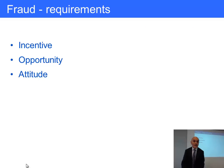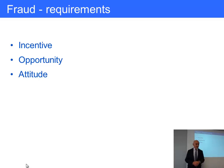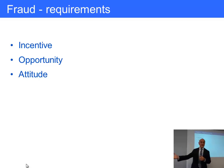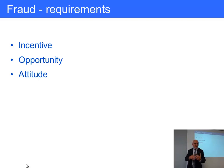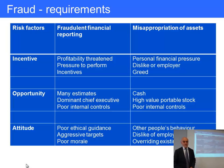For fraud to occur, you need three elements. First, incentive — something that pushes people to commit fraud, like financial pressure at home. Second, opportunity. But those two alone aren't enough: I might be short of cash and see money in a till, but only if my attitude is a dishonest one will I take the final step and steal. So we need all three — incentive, opportunity, and attitude — to be present.